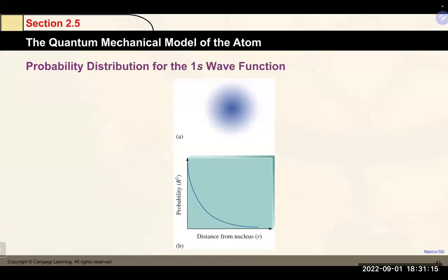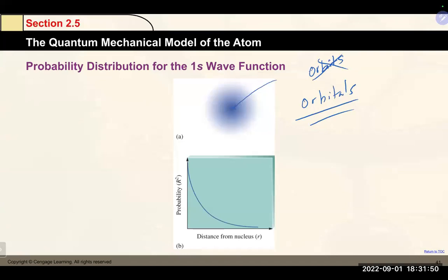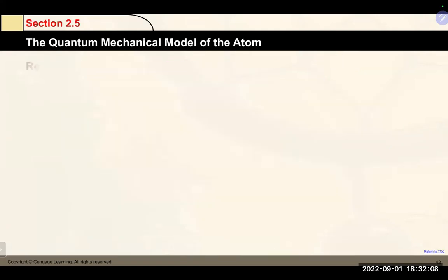In these probability maps, it's very dark in the center where the nucleus is, and lighter as you fan out. We transition from Bohr's concept of orbits to orbitals — probability maps where electrons are likely to be found. There are s orbitals, p orbitals, d orbitals, and f orbitals. I want to cover those orbitals and then come back to electron configuration.